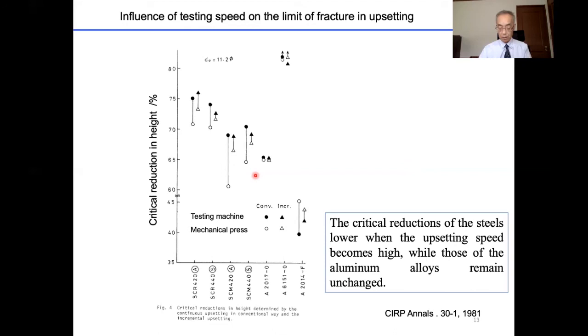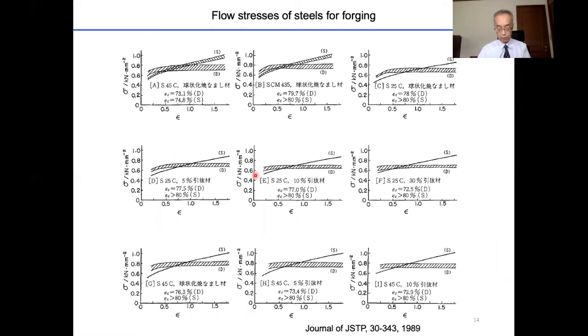The temperature at the surface of the specimen upset by the mechanical press reached about 200 degrees Celsius and 108 degrees Celsius at 70 percent reduction in height with steel and aluminum alloy respectively. The dependency of the critical reduction upon upsetting speed was supposed to be due to the dependency of the ductility of the materials upon temperature. The device to take the charge. And he measured the flow stresses of forging materials as a material database shown in this figure.